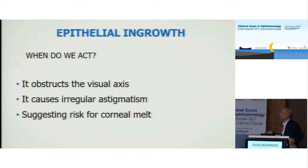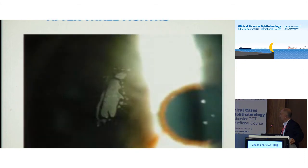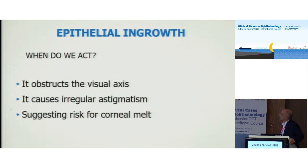The last intrastromal complication is epithelial in-growth. When do we act? Three criteria: when it is in the visual axis causing irregular astigmatism, or when it causes corneal melting.